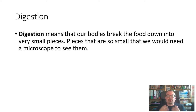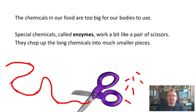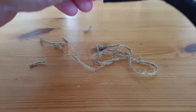Digestion means that our bodies chop and break down the food into tiny pieces. These pieces are so small that we need a really powerful microscope to see them, and this starts happening as soon as the food goes into our mouth as soon as we start chewing it. You can think about all the chemicals inside our food as a long piece of string — it's too long for our bodies to do anything with. So inside our bodies are lots of special chemicals called enzymes. You can think of them like special scissors; they begin to chop up the long pieces of string into much smaller pieces.